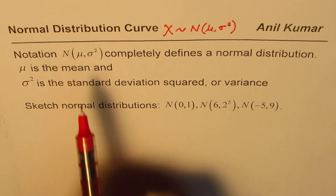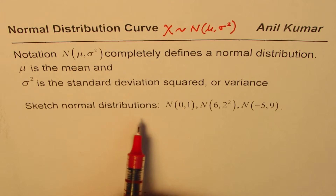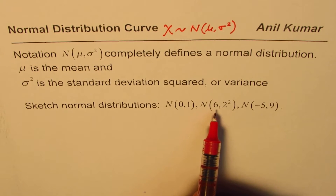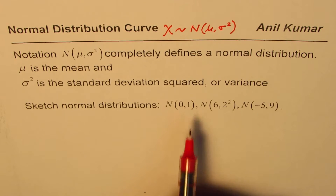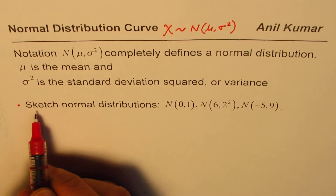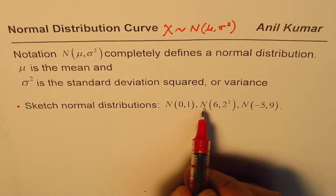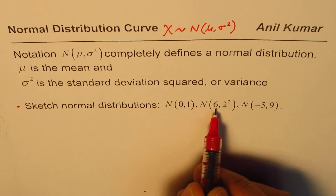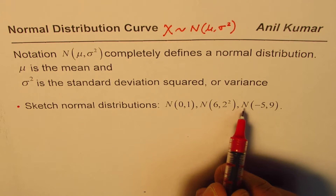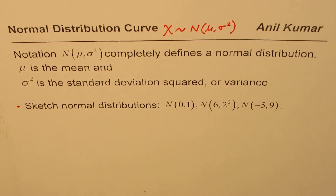The normal distribution curve, as you know, is a bell-shaped curve. We'll sketch this curve for different parameter values to see how they are similar and how they differ. The three cases are: N(0, 1), N(6, 4) where 4 = 2², and N(−5, 9) where the mean is −5 and variance is 9.